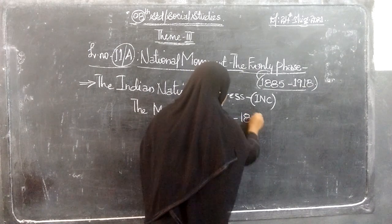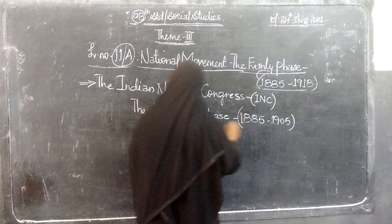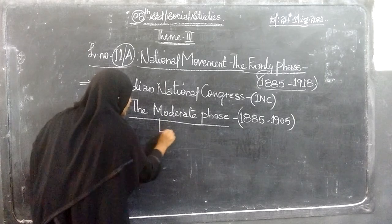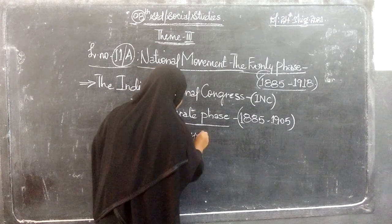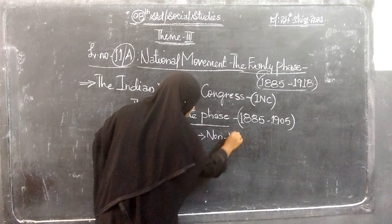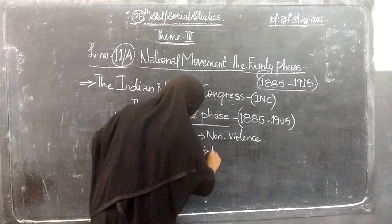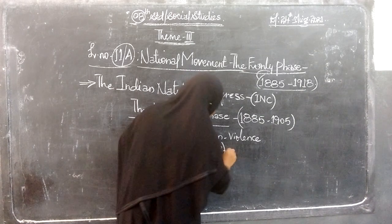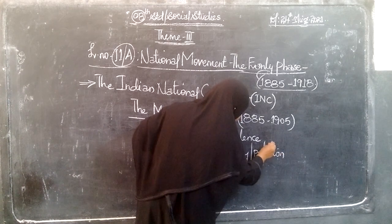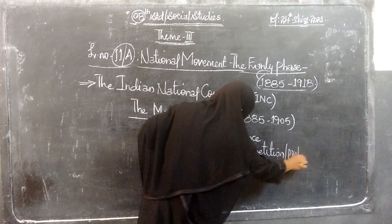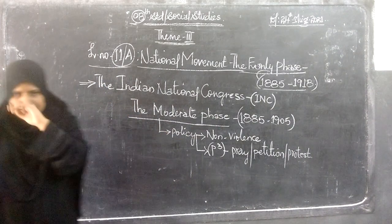The moderate phase of the Indian National Congress begins from the year 1885 to 1905. The policy of the moderate phase is non-violence — what we can call the 3 P's: Pray, Petition, and Protest. This is the policy of the moderates.